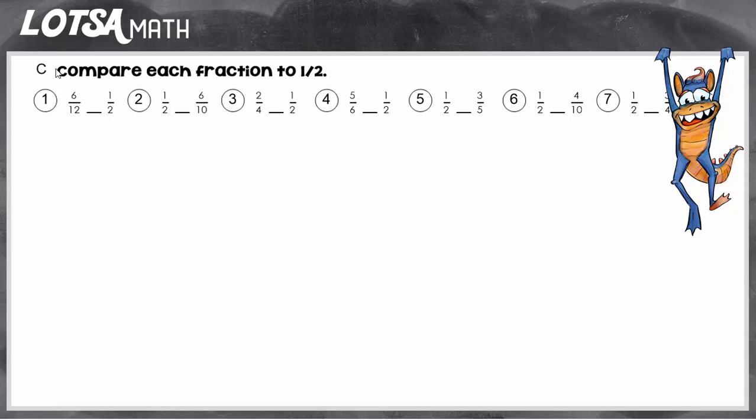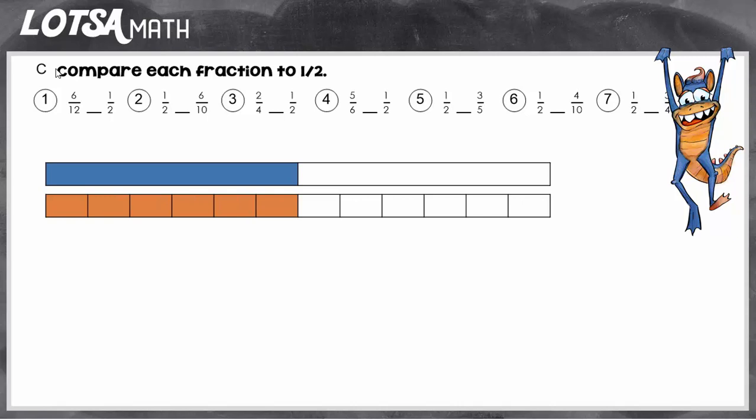So I can think about the fraction six twelfths and know that it has twelve parts. Then in my mind I can think where would the halfway point of twelfths be? Well on this model you can see in the orange we have twelve parts. The exact halfway point is going to match up with the exact halfway point of a fraction that shows two pieces.